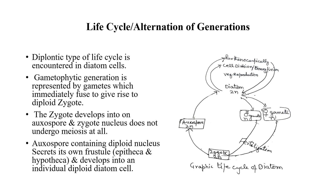The auxospore contains a diploid nucleus and develops into an individual diploid diatom cell. This is how the life cycle takes place in diatom cells.